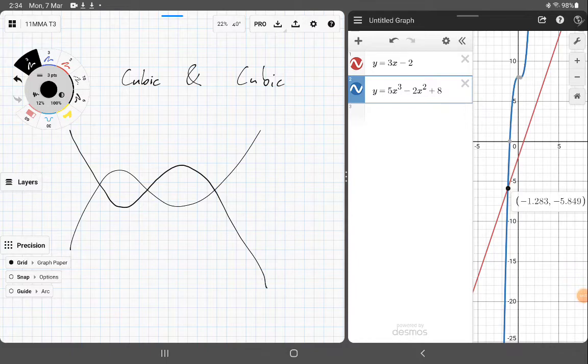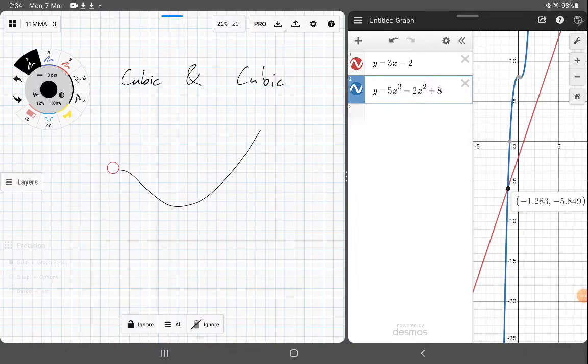And it doesn't really matter how you draw it. Obviously, you can draw it with getting, you know, a kiss here and then through like that. So you can get two or one solution as well. But the kind of game is to kind of play around with that.